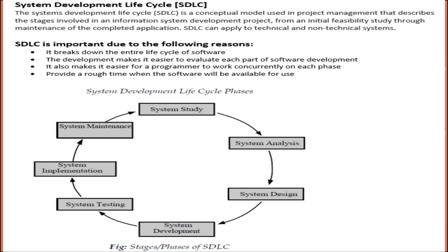The systems development life cycle (SDLC) is a conceptual model used in project management that describes the stages involved in an information system development project, from an initial feasibility study through maintenance of the completed application. SDLC can apply to both technical and non-technical systems. SDLC is important due to the following reasons.